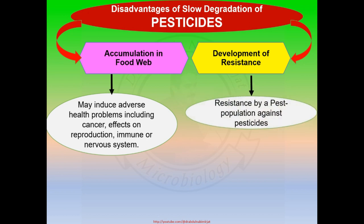Resistance against pesticides by a pest population may be due to several reasons in addition to slow degradation, such as overdose of the same pesticides with a similar mode of action, and also due to the polar and apolar status of a pest and the pesticide's chemical structure.